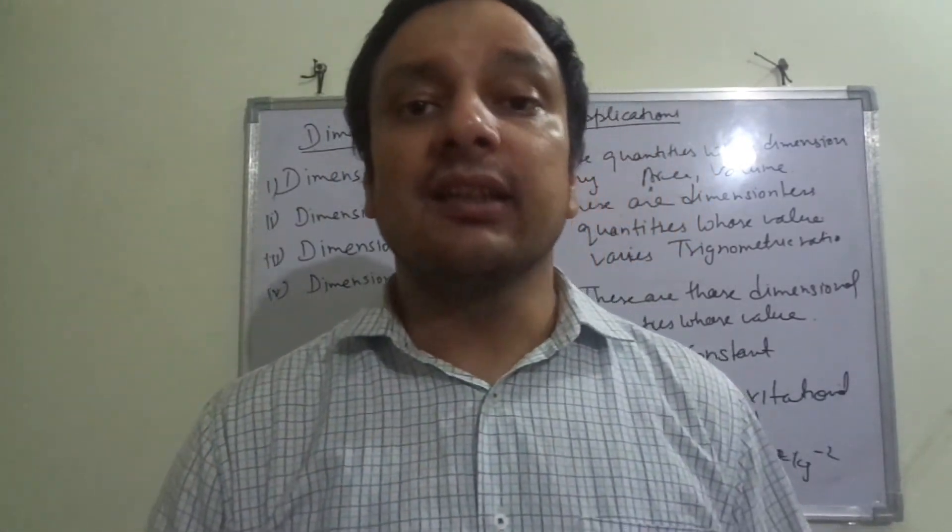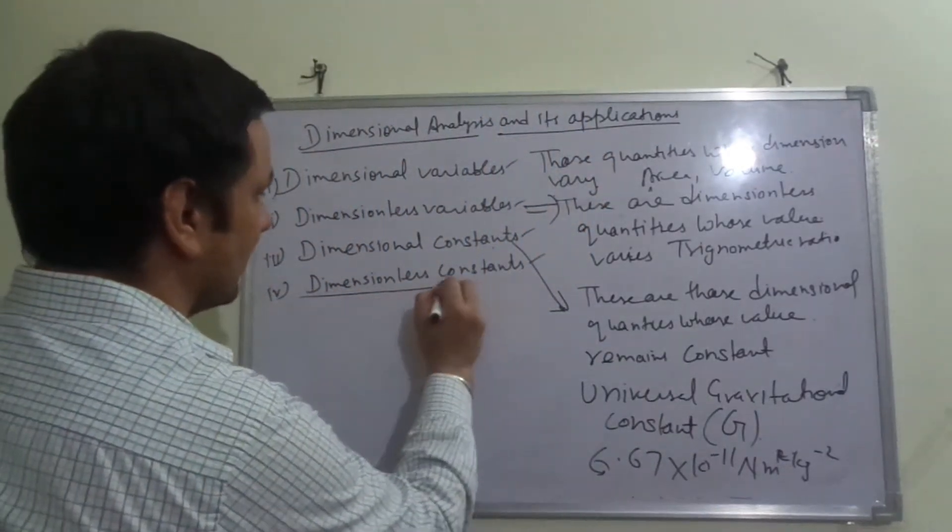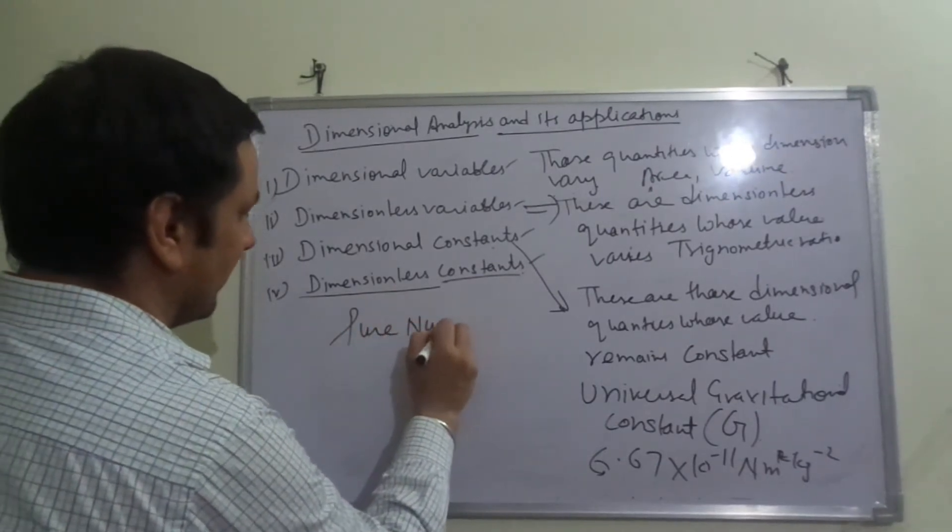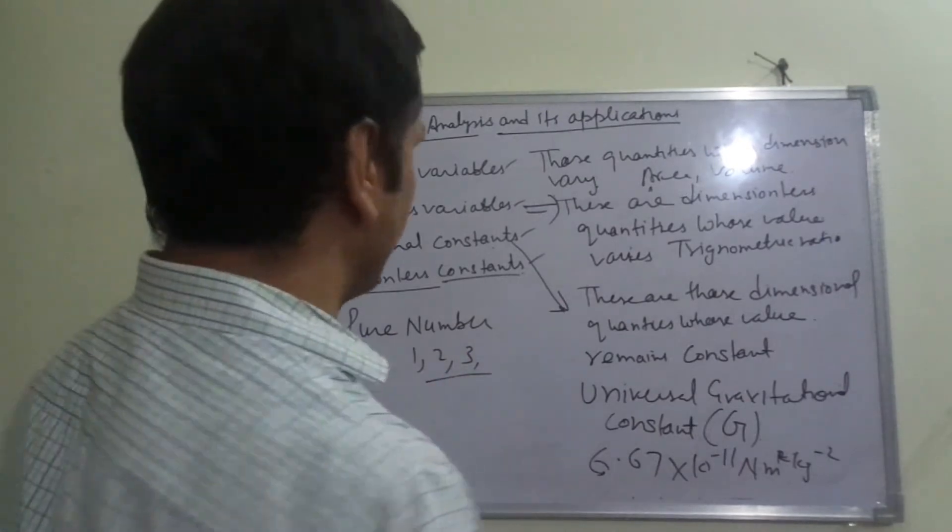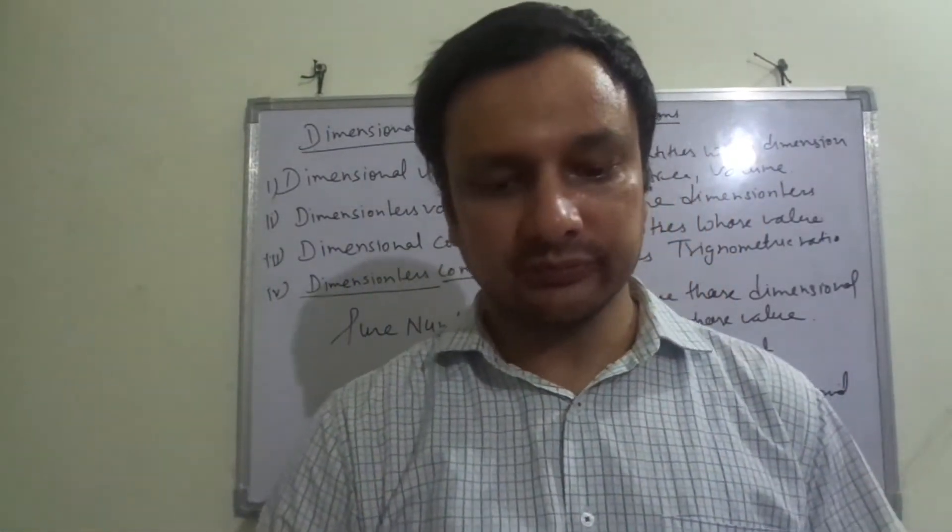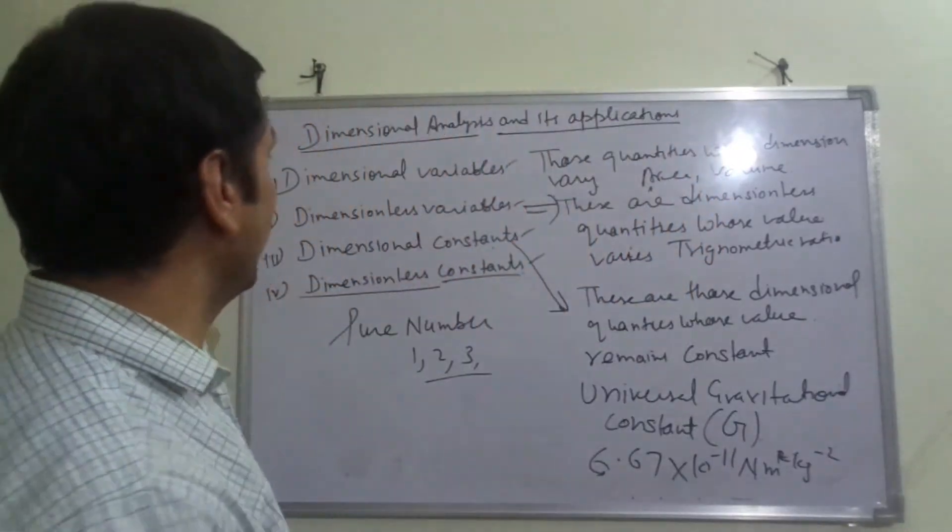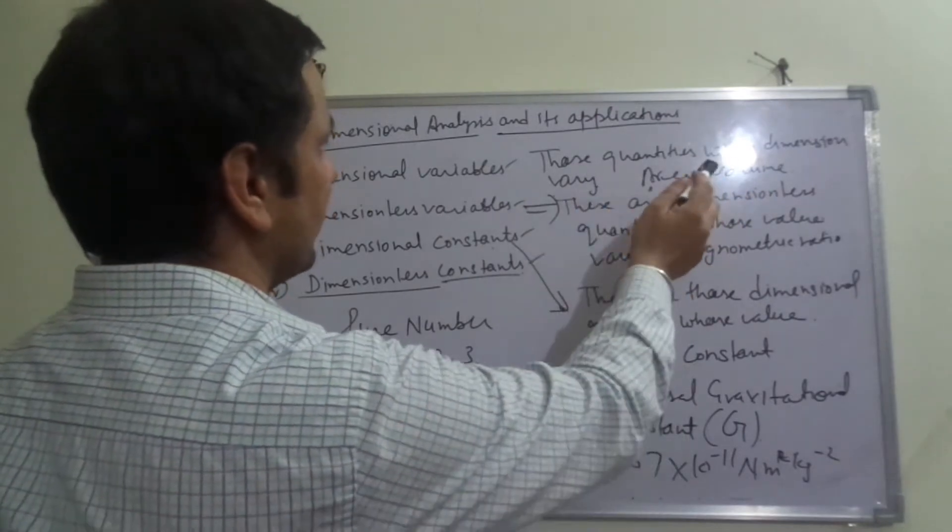Dimensionless constants - these don't have dimensions but still they are constants. So these are your pure numbers: 1, 2, 3, pi, etc. These are your dimensionless constants. Those quantities whose dimensions vary - area, volume. Dimensionless quantities whose value varies.